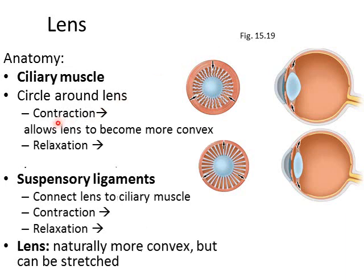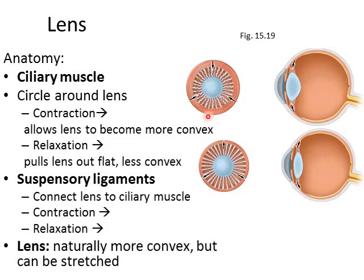Because of its elastic properties, that's the direction it's going to go naturally. So with contraction, this loosens the suspensory ligaments and allows the lens to become more convex. With relaxation of the ciliary muscle, this is going to pull those ligaments out, tighten up the ligaments, and makes the lens flatten out. So this moving more convex occurs when an object becomes closer and needs to focus the light more. When the muscle relaxes and tightens the ligaments, that occurs when an object is moving further away and we need to focus the light less. Contraction leads to loosening of the suspensory ligaments; relaxation leads to tightening. The lens is naturally more convex but can be stretched out by relaxing the muscle and tightening the ligaments.